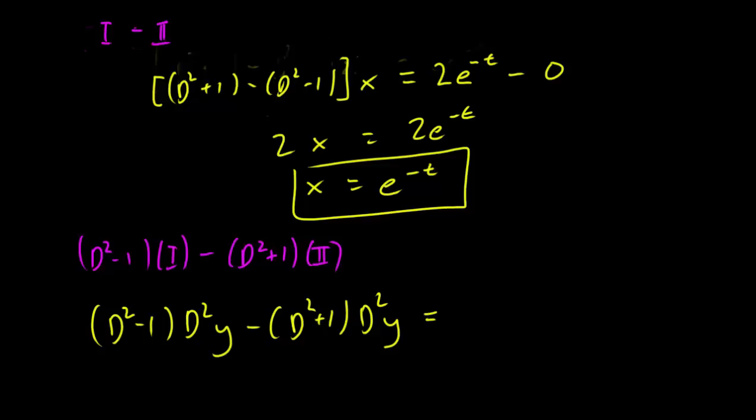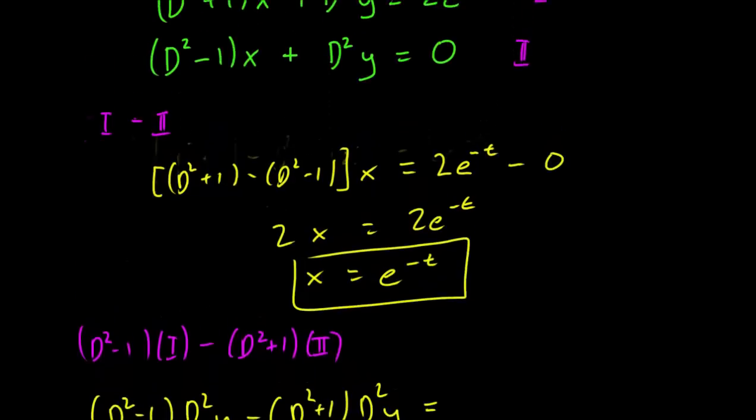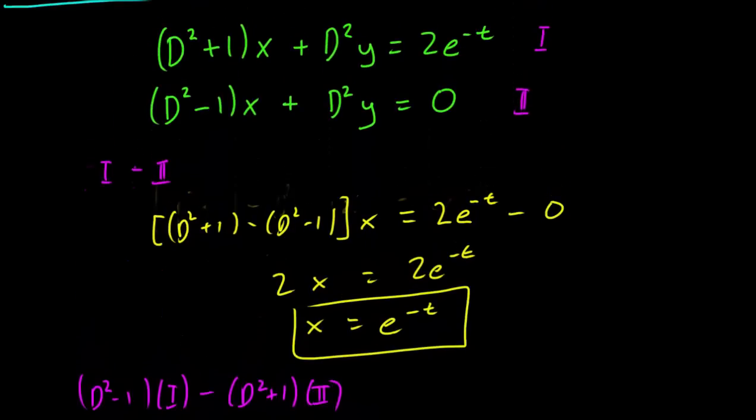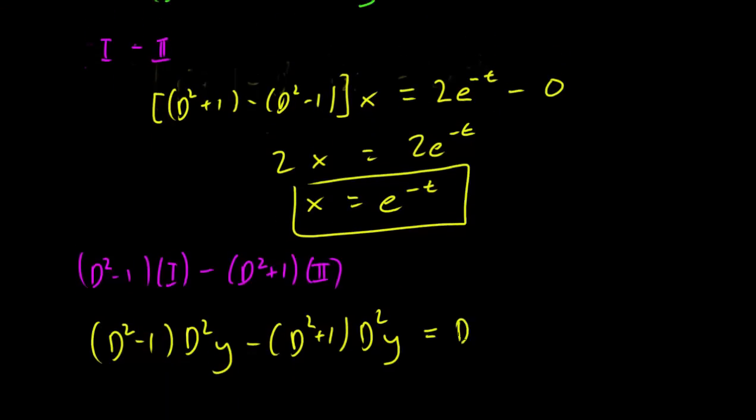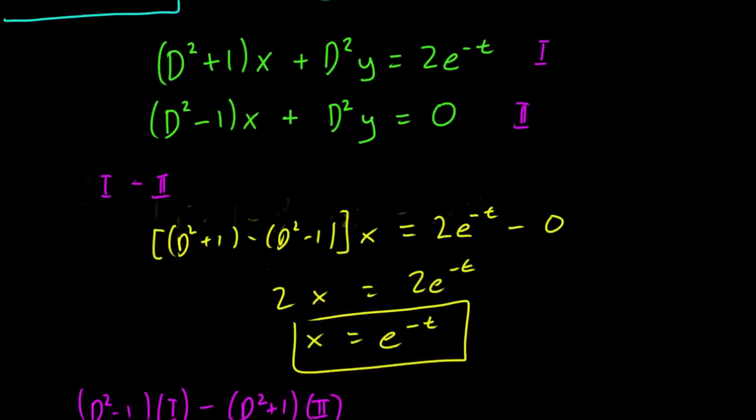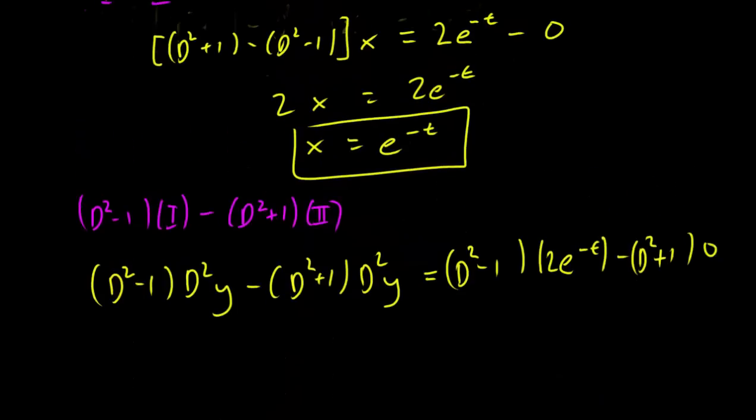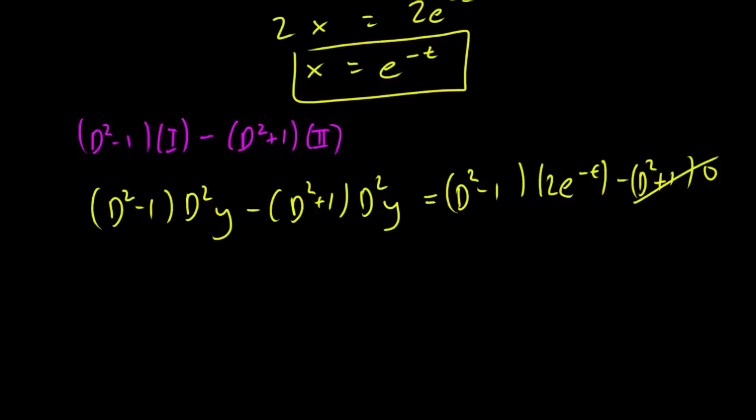now here's the part that students forget. Remember that you have to do this for the right hand side as well. So the right hand side here has a 2e^(-t), so we have to do that, so D squared minus 1 times 2e^(-t) minus D squared plus 1, but the right hand side for the second equation is 0, so we can just put a 0 here. All right, and this cancels of course.